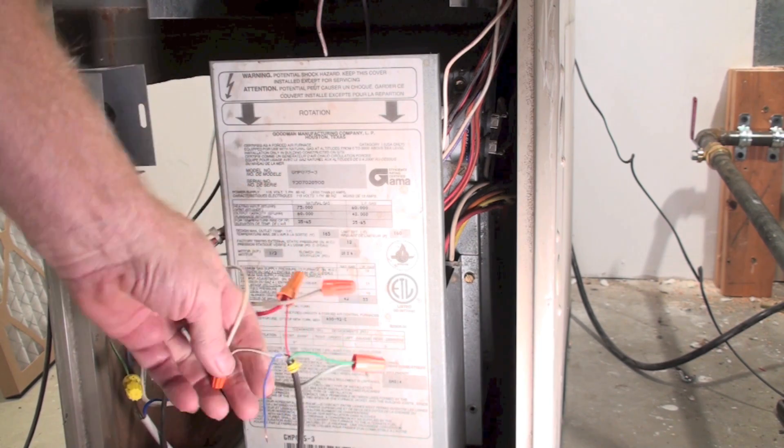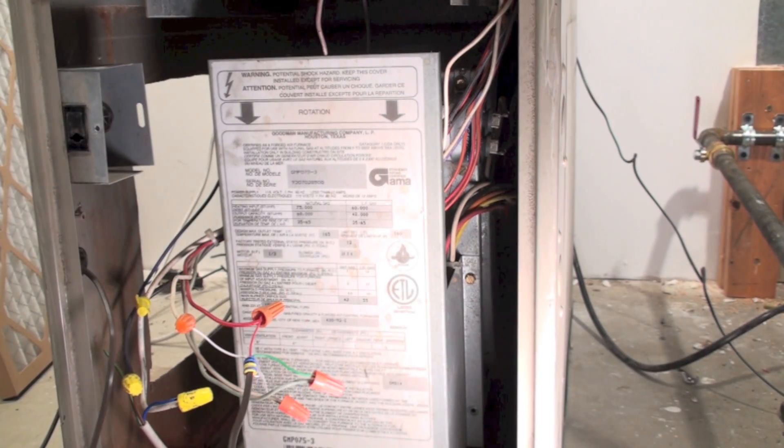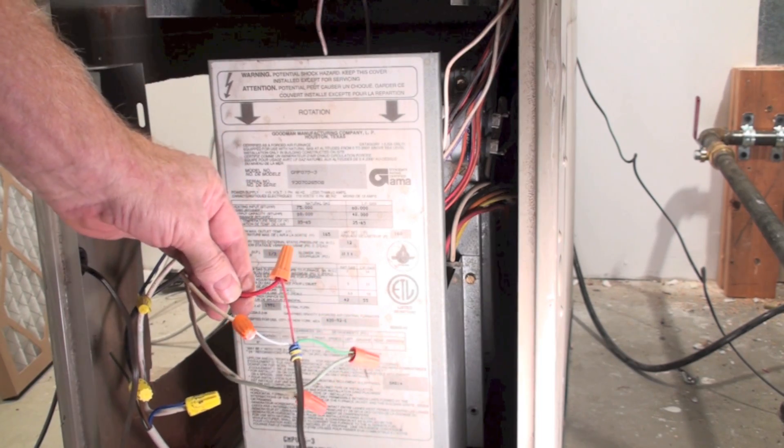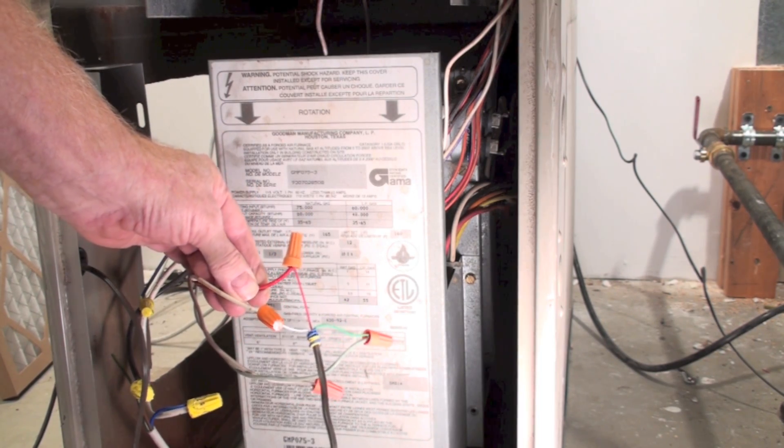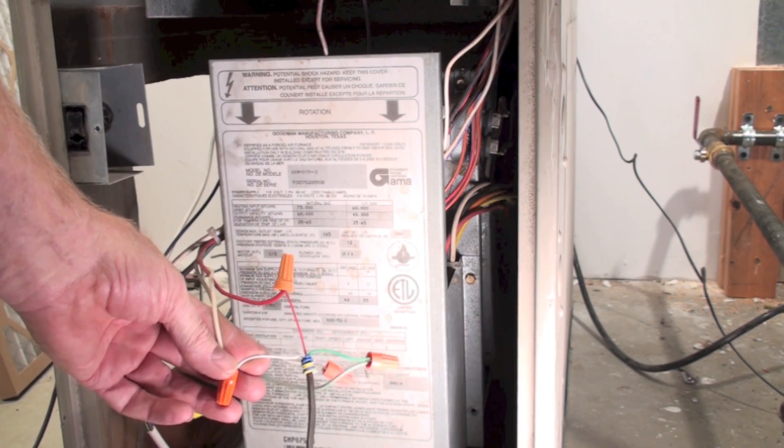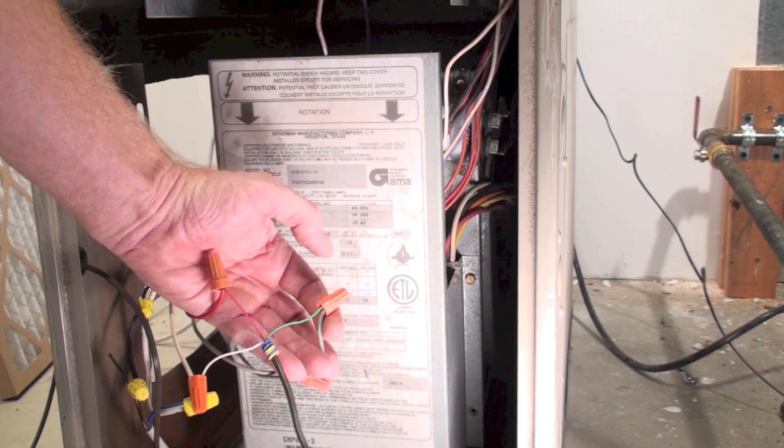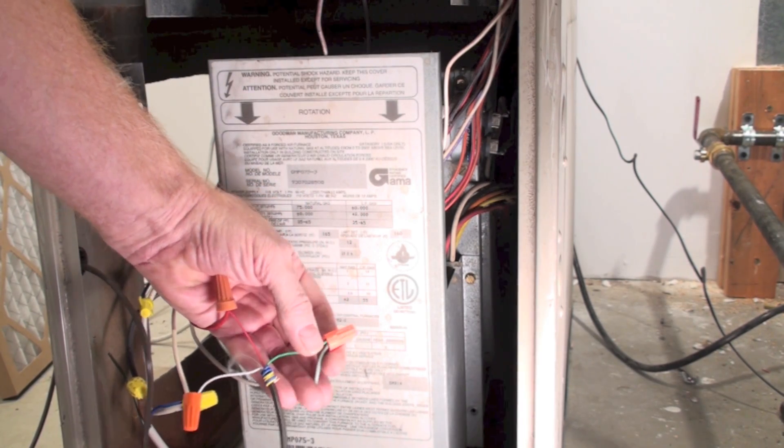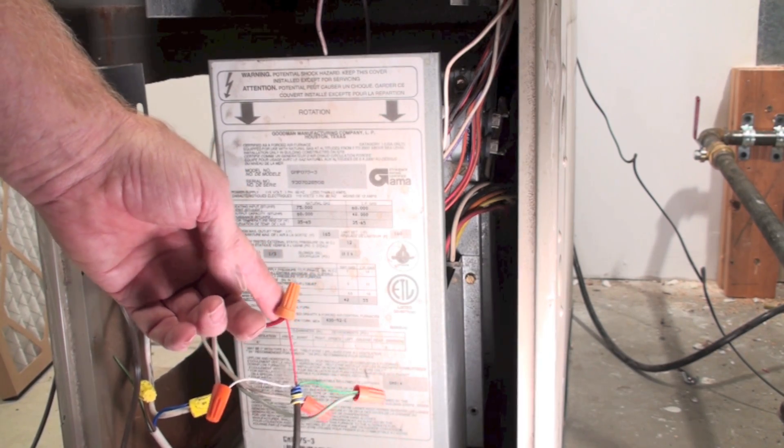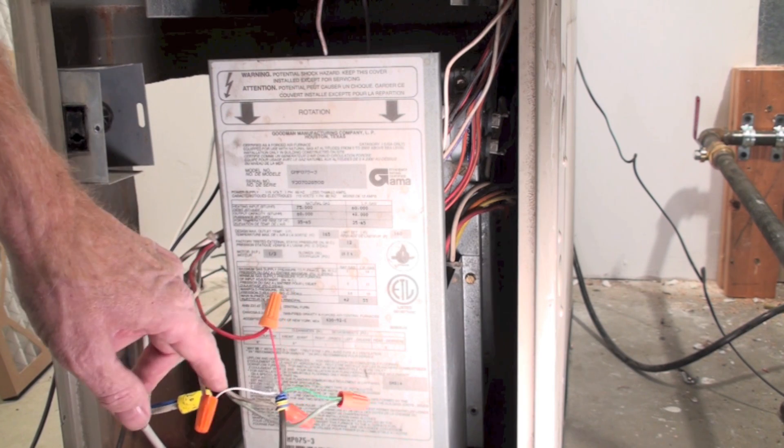So, what I've got hooked up here, we've got red coming out of the control going up to the thermostat, white coming out of the control going up to the thermostat, and green coming out of the control going up the thermostat. Red is a power source. That's a low voltage power that is fed up to the thermostat. It goes up to the thermostat through red and comes back through white.